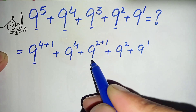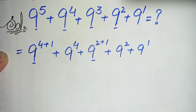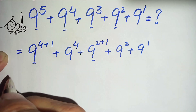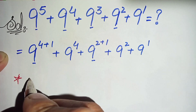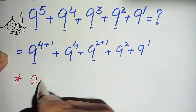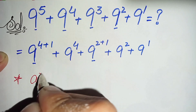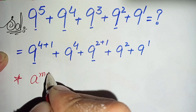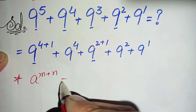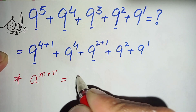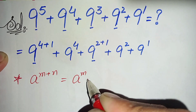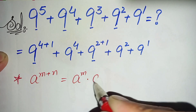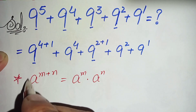In this next step, for the first term and the third term, we will use an exponential math property. The property is: r to the power (m+n) can also be written as r to the power m, times r to the power n.